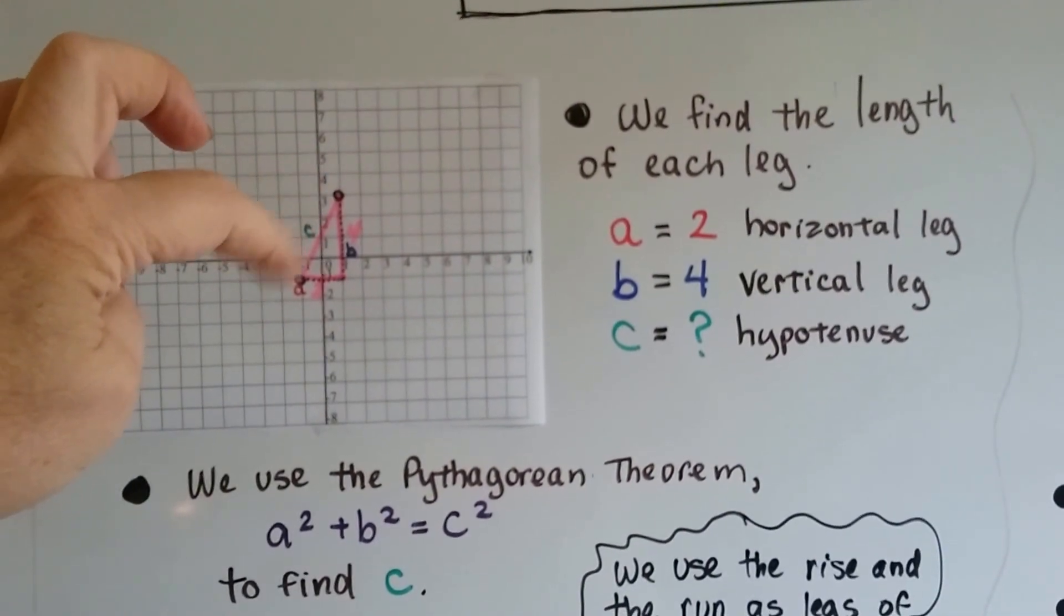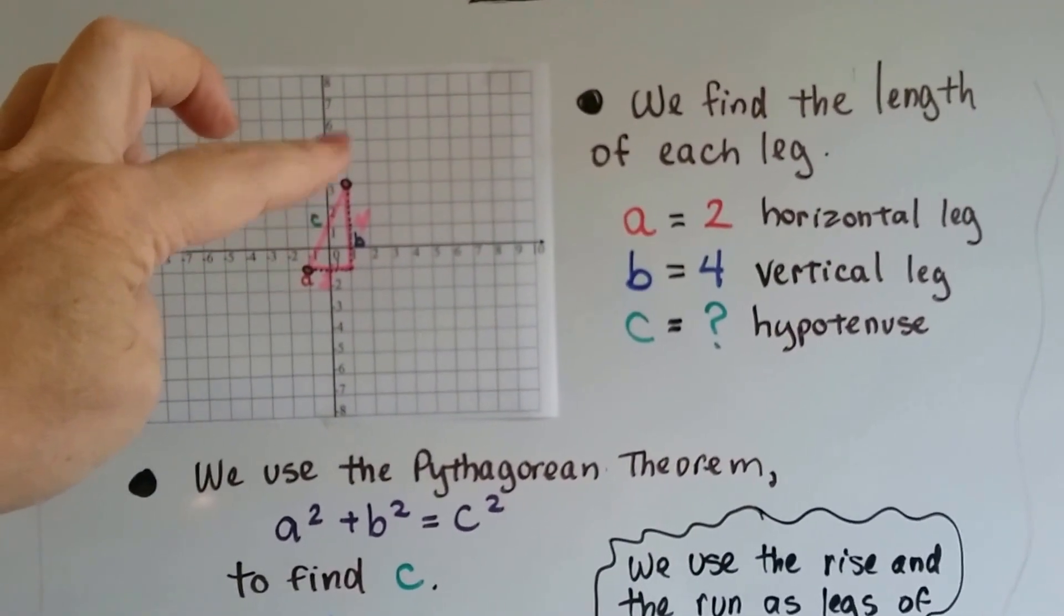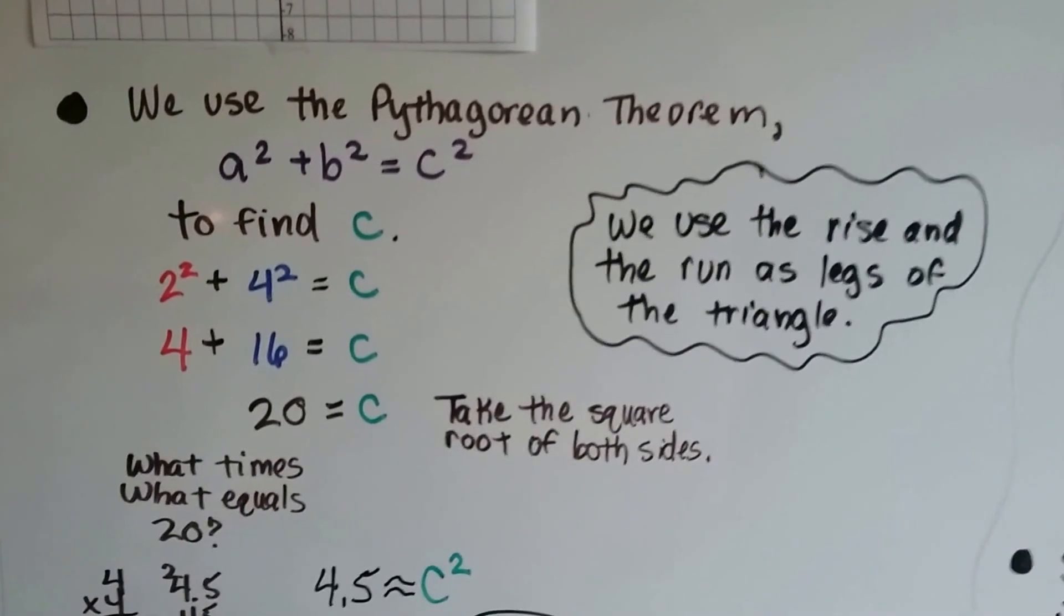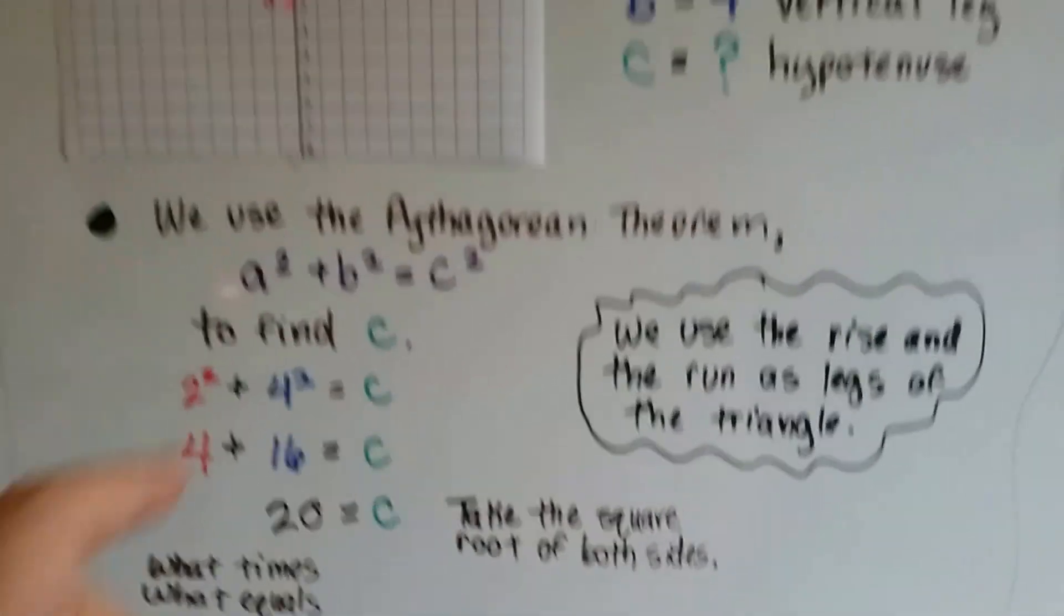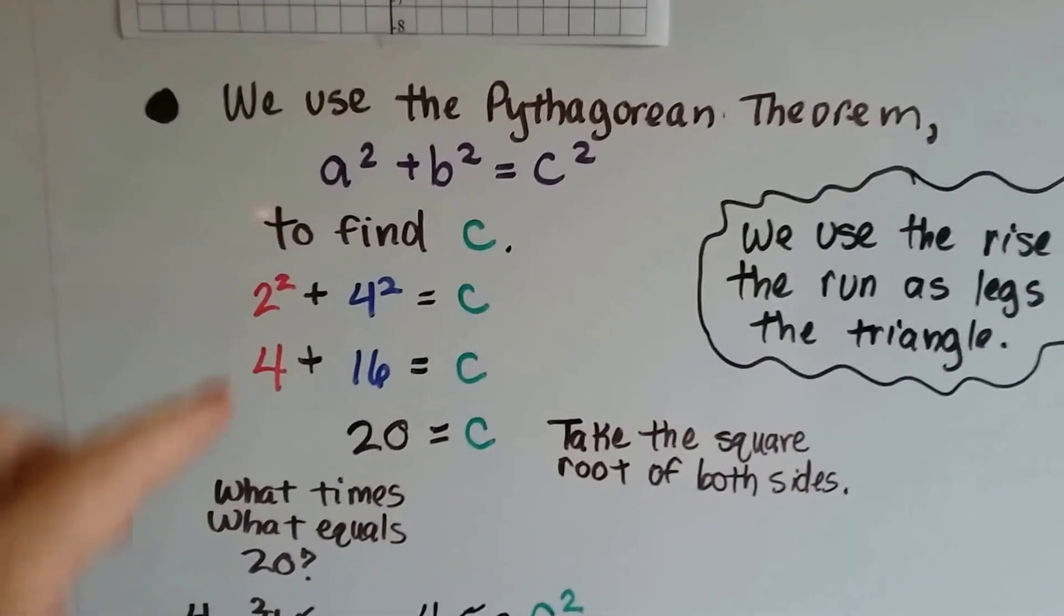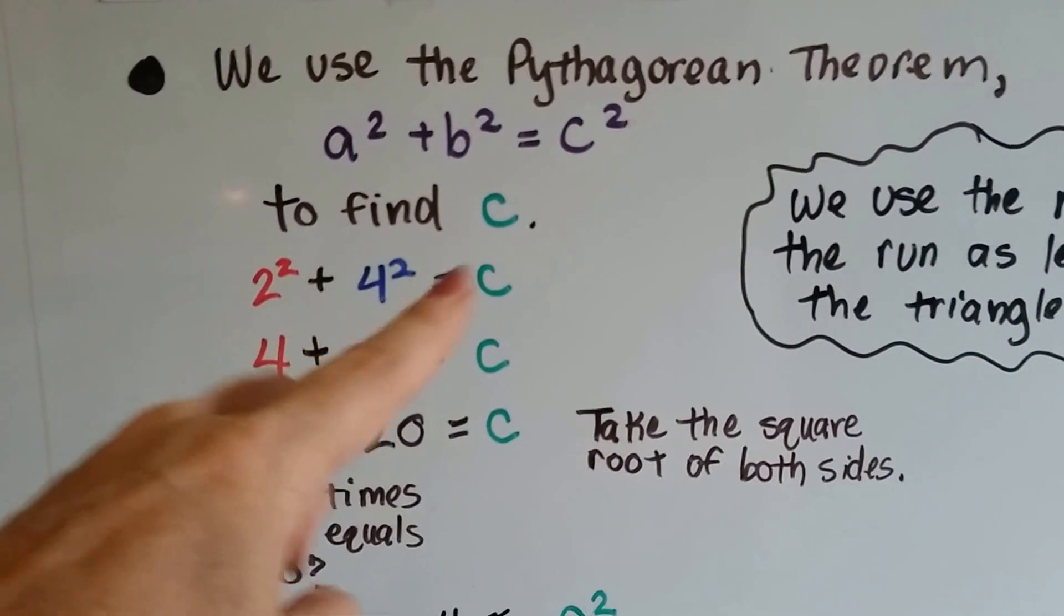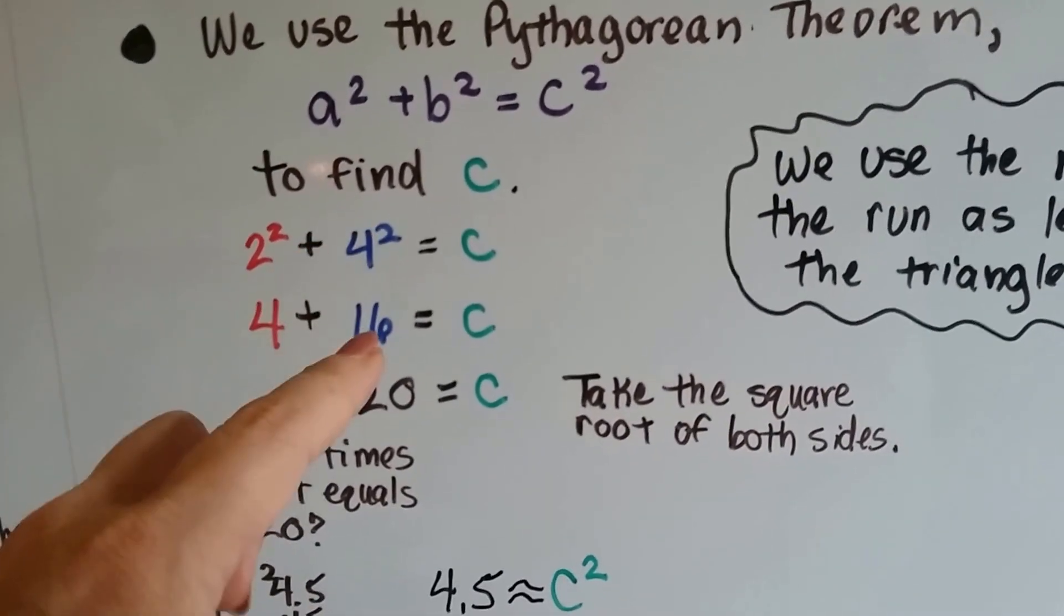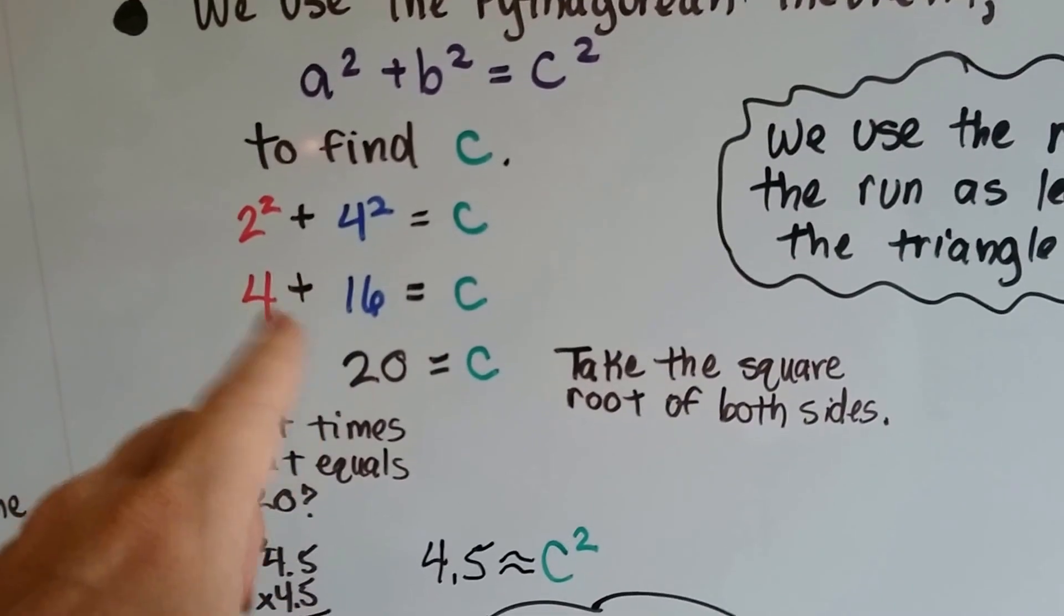We need to find c, the distance between those two points with the line segment. So we use the Pythagorean theorem. We're going to use the rise and the run as legs of the triangle. See? Here's the rise and here's the run. So if we've got 2 squared plus 4 squared equals c squared, that means 2 times 2 is 4 and 4 times 4 is 16. We've got 4 plus 16. That's 20.